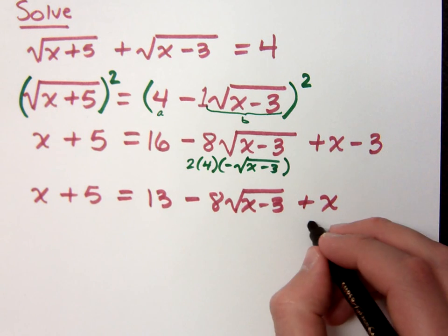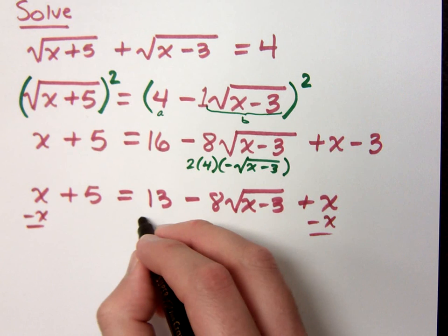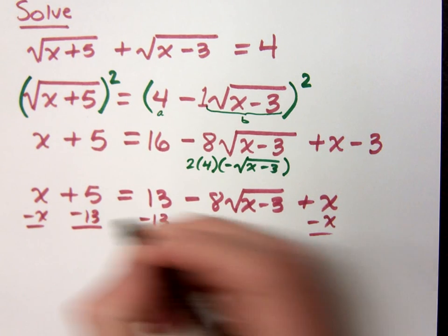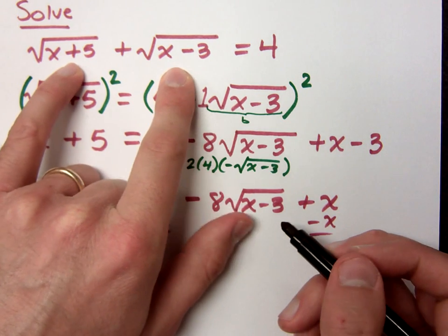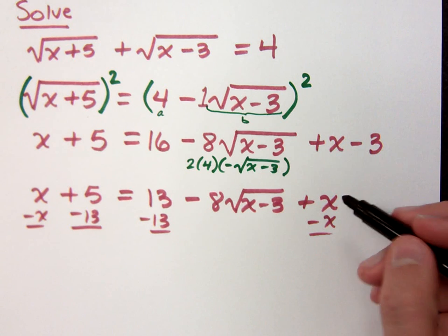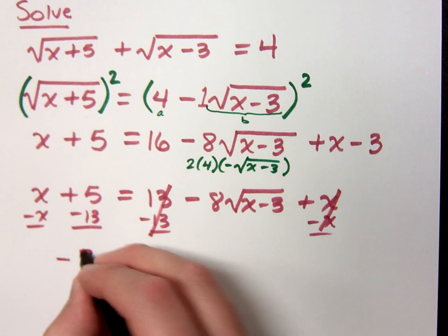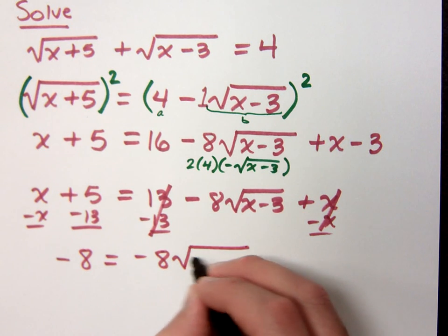Then we need to get everything to one side, so I'm going to subtract x, subtract 13. I didn't mean to say get everything to one side, I mean get this radical by itself. Because see, we started with two radicals in the original problem. We applied the power property, now we only have one radical, so this is the guy we want to get by itself.